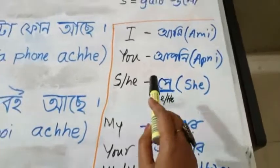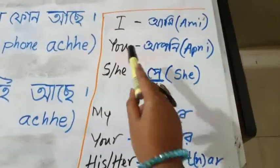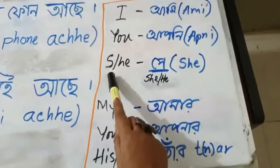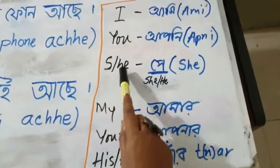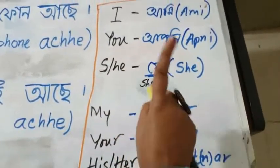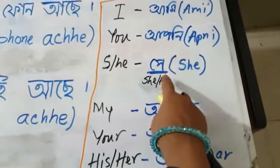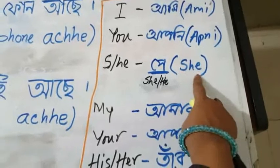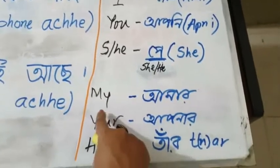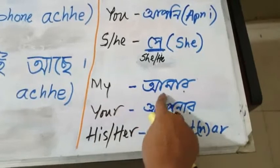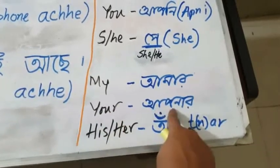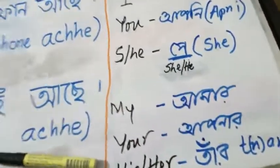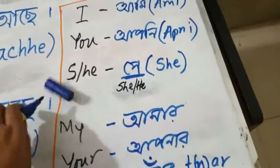Let's have a look at the pronouns once again. 'I' is 'ami,' 'you' is 'apni,' and 'she' or 'he' — for both of these words we have one Bangla word. The pronunciation is 'she' — this is not the English 'she.' 'My' is 'amar,' 'your' is 'apnar.' I have not written the phonetic here.